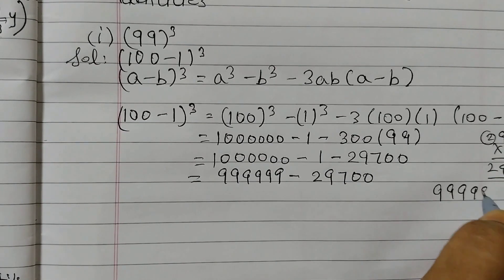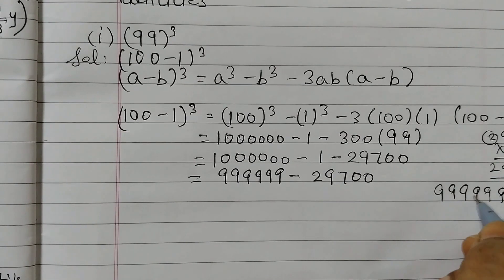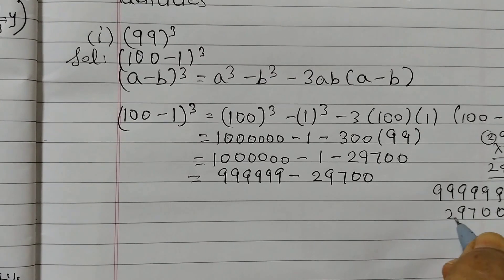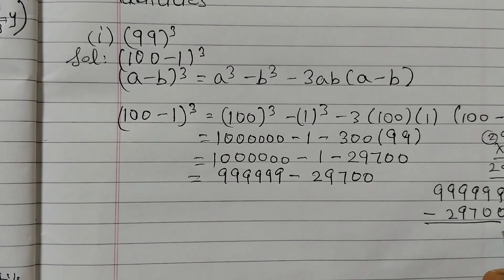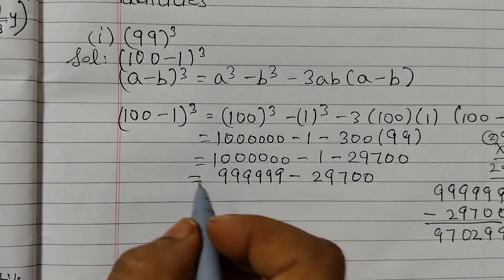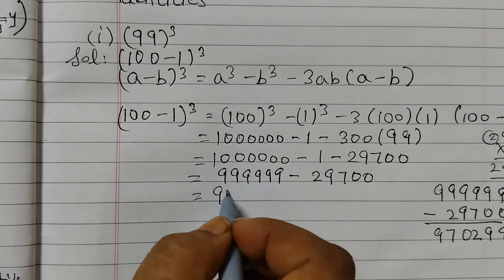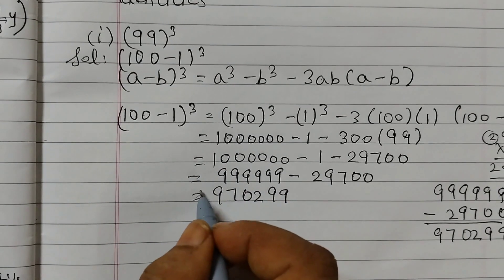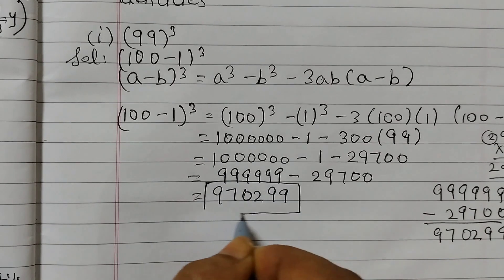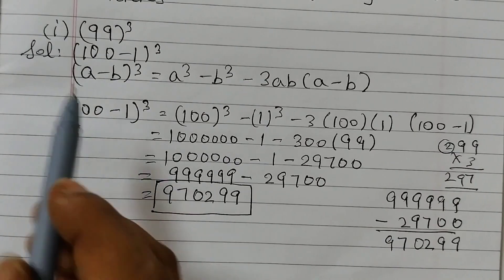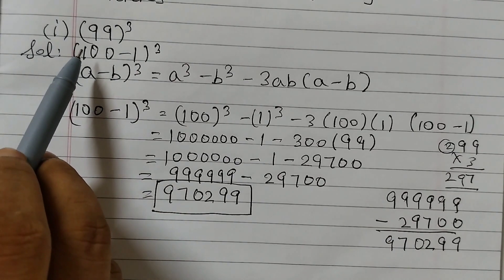Now we do the subtraction: 1,000,000 minus 1 minus 29,700. Subtracting: 1,000,000 - 29,701 = 970,299. So 99 cubed equals 970,299. This is the answer for the first one.